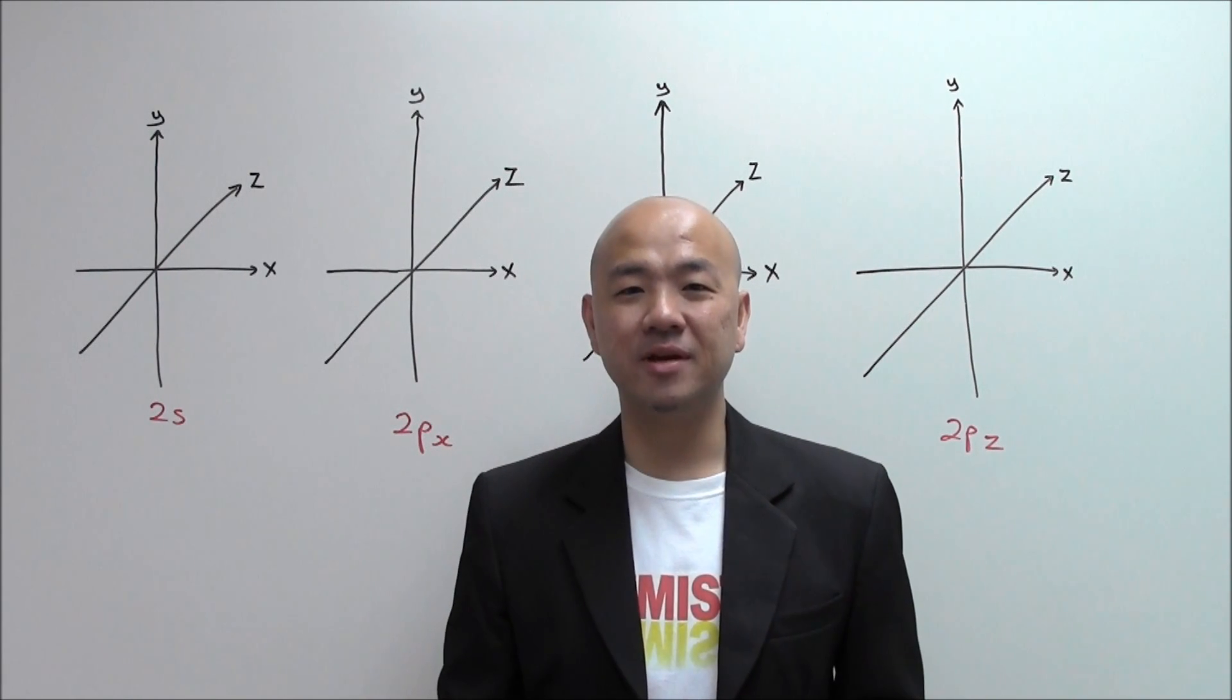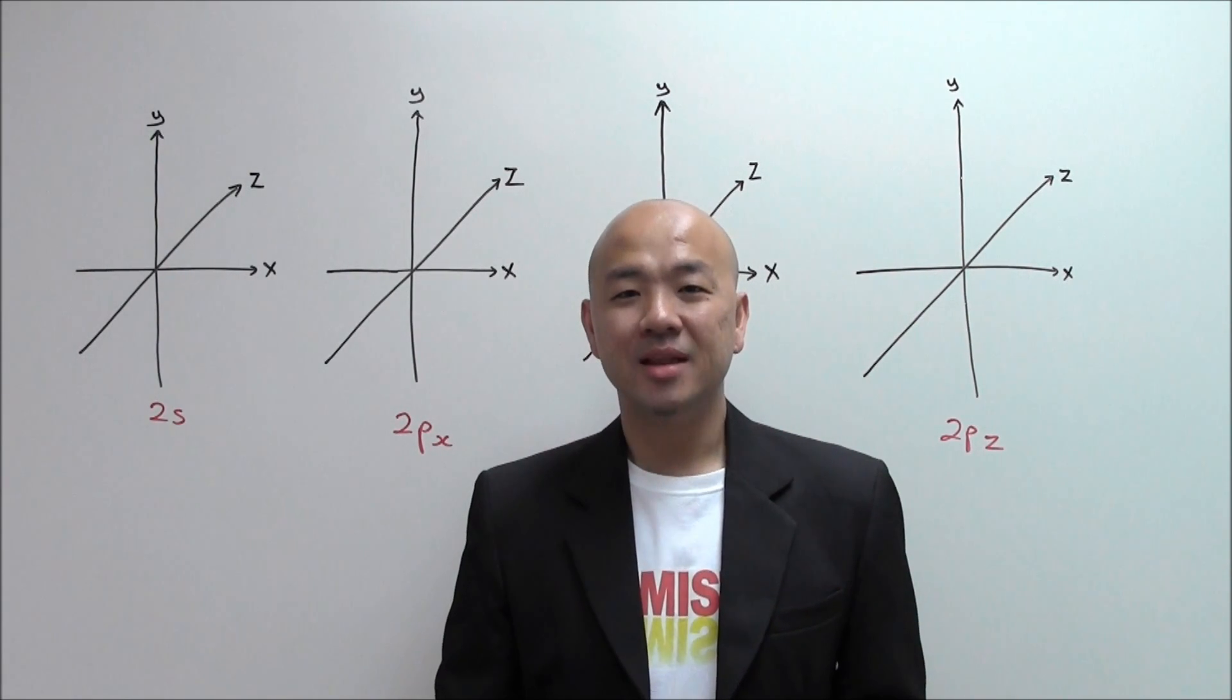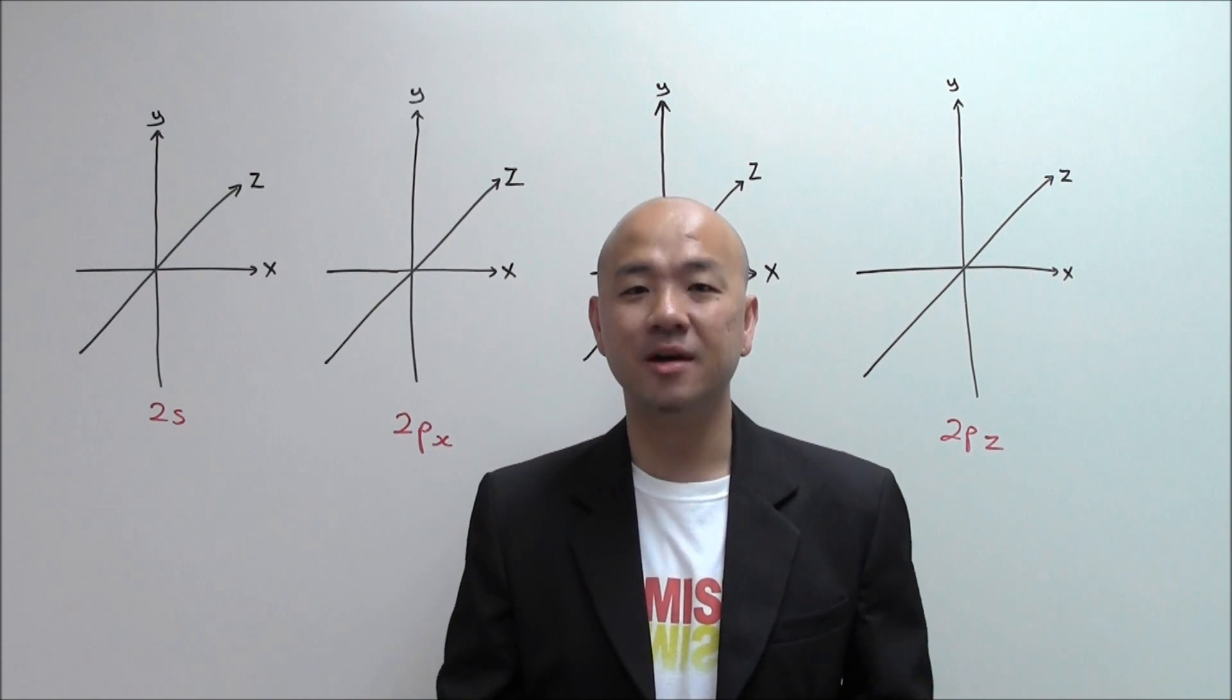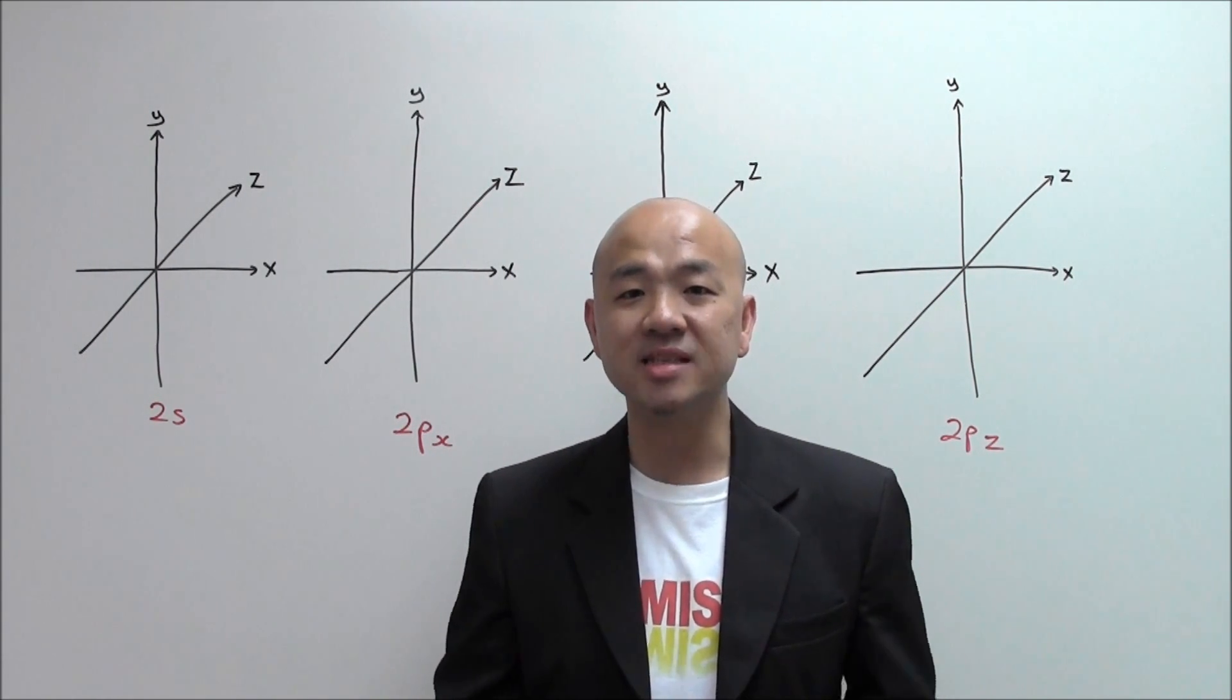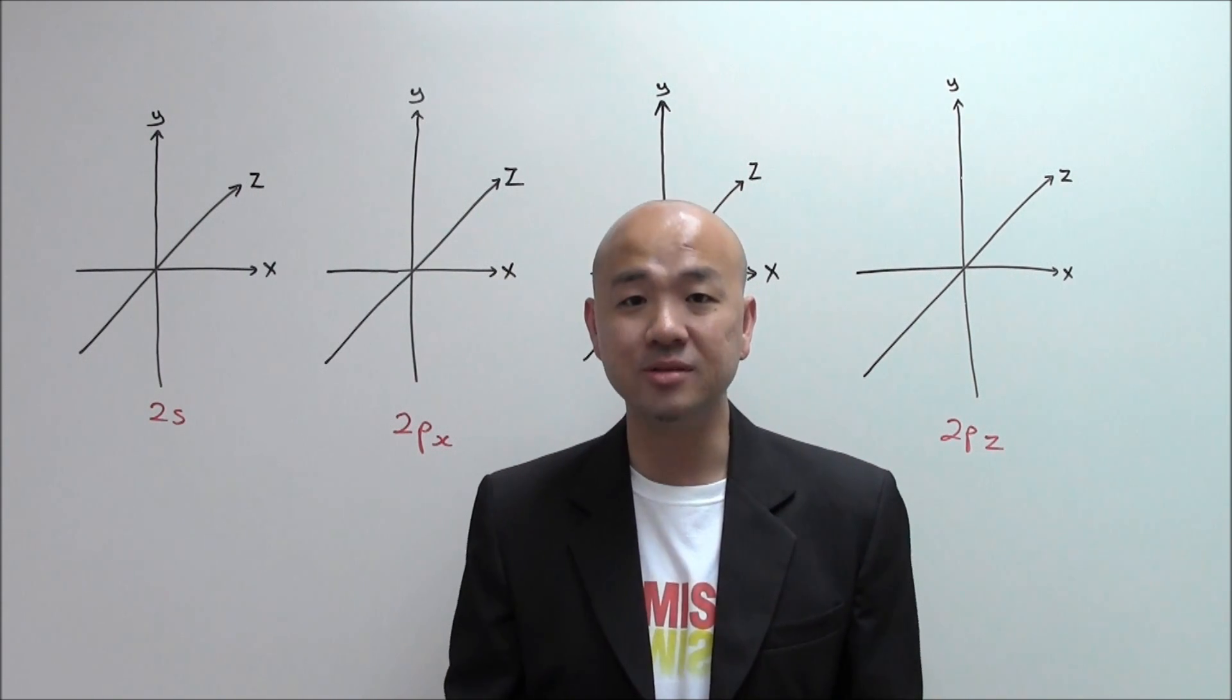Hi everyone, this is Sean Chua from alevelh2chemistry.com. Now in atomic structure you learn about atomic orbitals, which is the region whereby it has the highest probability of finding electrons around the nucleus.